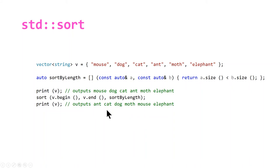Note that I was testing this with MSVC and it actually did maintain the order of dog, cat, and ant. But that's not guaranteed when using sort. That's what stable sort is for. Let's take a look at stable sort.